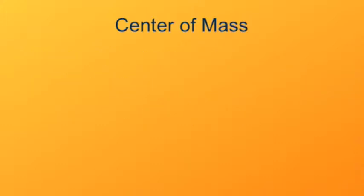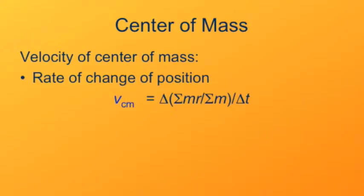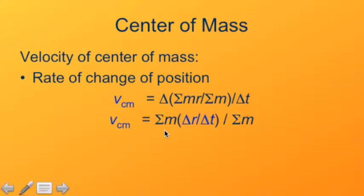The velocity of the center of mass is just the rate of change of position of the center of mass. So here I've got the expression for position and saying how it changes with time. The mass doesn't change with time. All that's changing is the position of each object. So we can re-express our equation to reflect that fact. So here I've taken out the masses which are constant quantities and expressed it as the rate of change of each individual particle. That rate of change of the position of each individual particle is just the velocity of the individual particle.